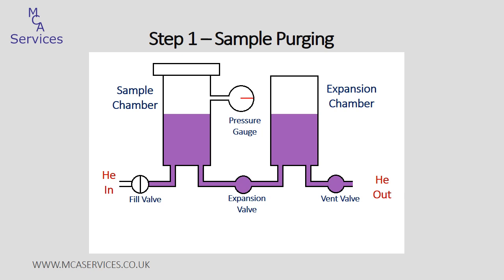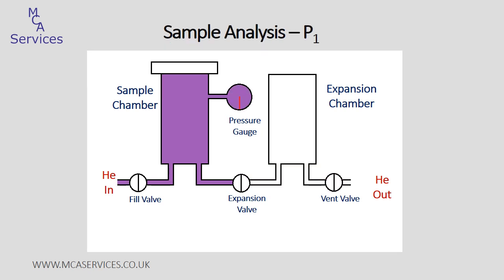The first stage of analysis is to fill just the sample chamber with helium, typically to around 20 psig — again selectable by the user. The pressure is then allowed time to equilibrate, and the conditions for determining equilibration are selectable by the user; we tend to use a rate of pressure change less than 0.005 psig per minute. With the sample chamber isolated, this pressure is recorded as the value P1, used later in the density calculation.